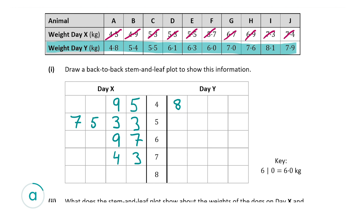On Day Y we have two values alongside 5: 5.4, so we put 4 in, and then 5.5, so we put a 5 in. The 4 goes first as it's a smaller number, followed by 5. Then we have 6.1, 6.3, and 6.0. Be careful here as they are not in order from lowest to highest. We must put 0 first, then 1, then 3.